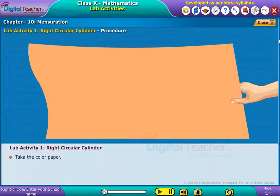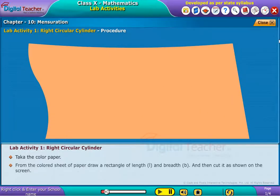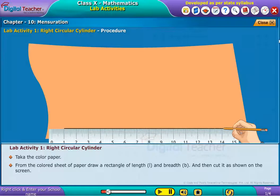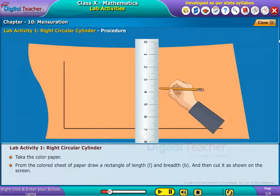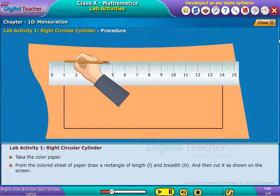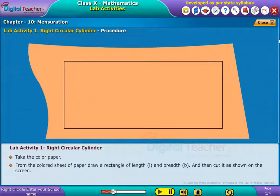Take a color paper. From the colored sheet of paper, draw a rectangle of length L and breadth B and then cut it as shown on the screen.